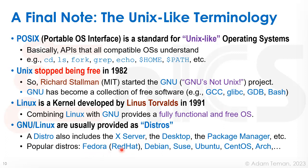Some popular distros are Fedora, Red Hat, Debian, openSUSE, Ubuntu, CentOS, Arch, and others. These are different distributions providing a Linux kernel, the GNU libraries, and a different set of tools on top of them. There are people who really love one or the other, and different things are compatible with one or the other.